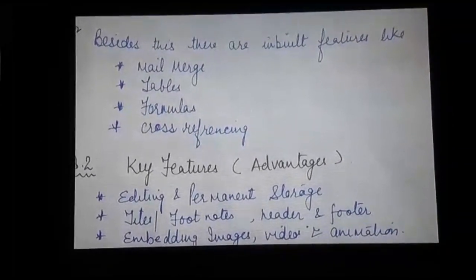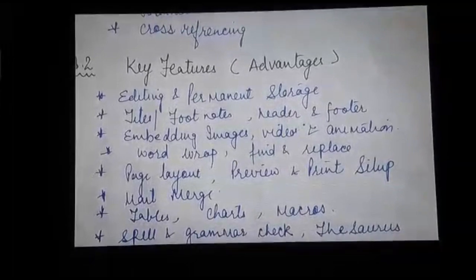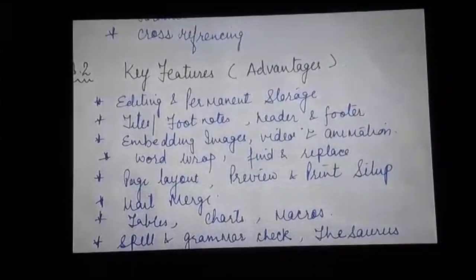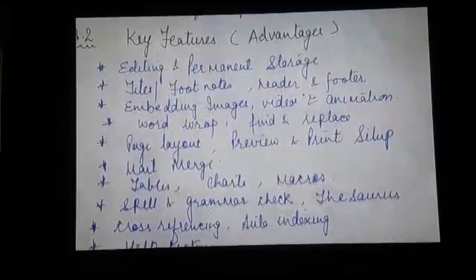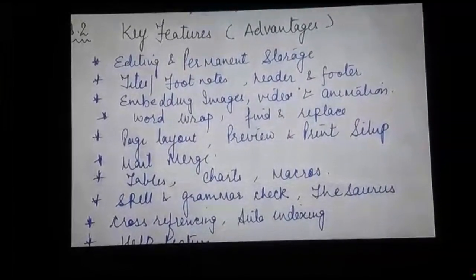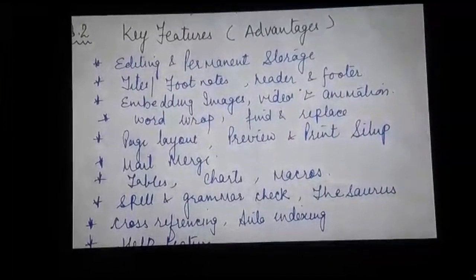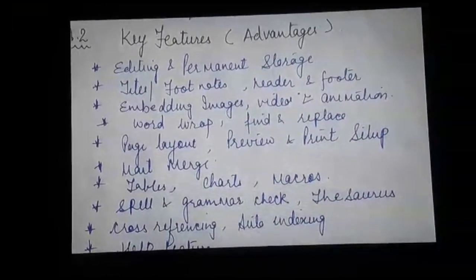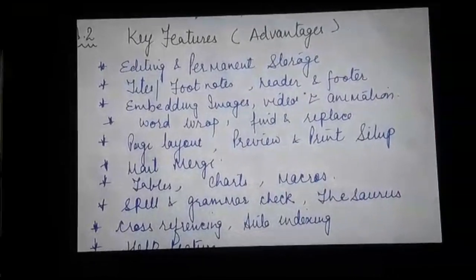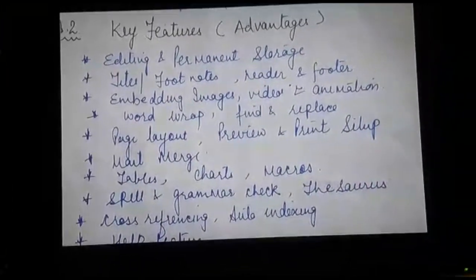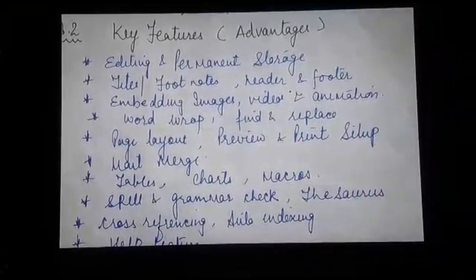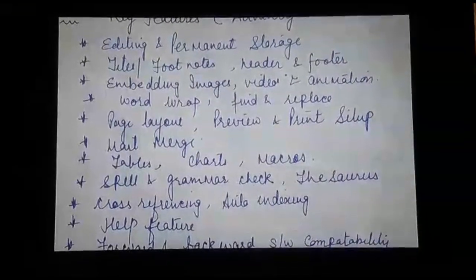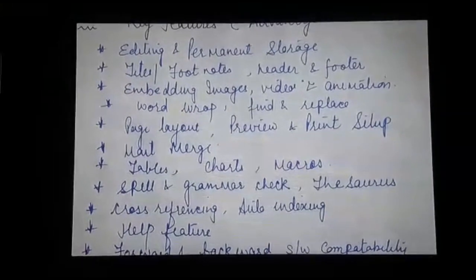Now I come to section 8.2, the key features or advantages of OO Writer. These include editing and permanent storage — we can edit and save the document. Then we have titles and footnotes, headers and footers. Headers are the information given at the top of the document and footer is the information given at the bottom. Next is embedding images, videos, and animation.